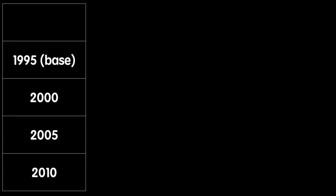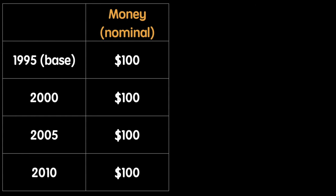The first column lists the year, with 1995 set as our base year. The second column lists the money wages earned by a hypothetical worker. For the sake of simplicity, we'll hold a worker's money wages constant. In the third column is a price index, which will indicate the general level of prices in the economy relative to the base year of 1995.